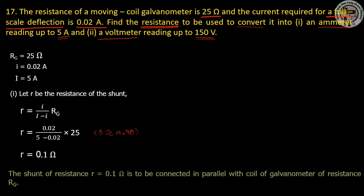The shunt resistance R equals 0.10 ohms, to be connected in parallel with the galvanometer of resistance R_G.